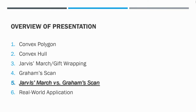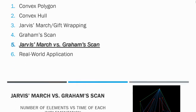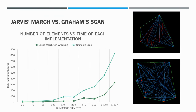Now we're going to compare Jarvis's March and Graham Scan. Jarvis's March outperforms Graham Scan in terms of time versus number of elements when using a randomly generated data set, because there are many data points but only a few hull points — and this works in Jarvis's March's advantage.